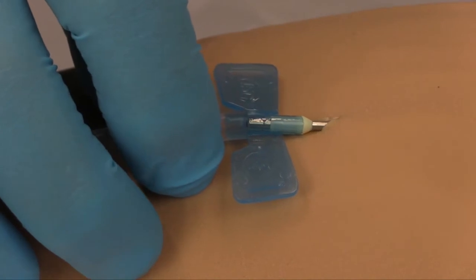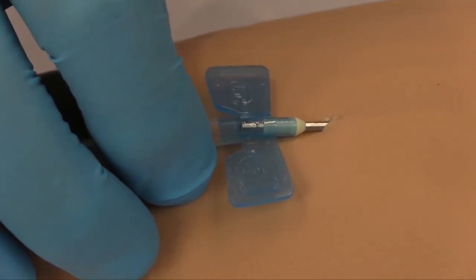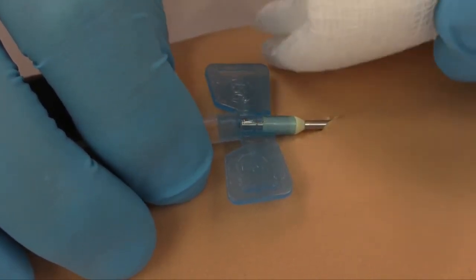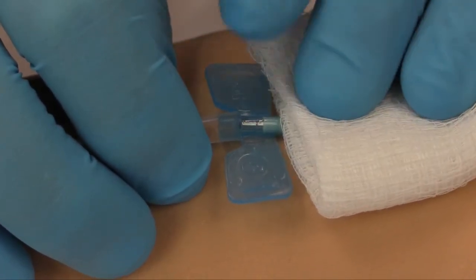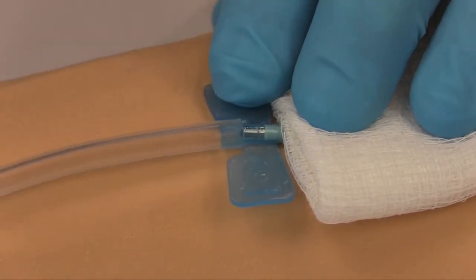Pull the needle back slightly, just enough to expose the puncture site. Position the gauze over the puncture site and hold gently in place. Be sure not to apply pressure until the needle is removed from the skin.